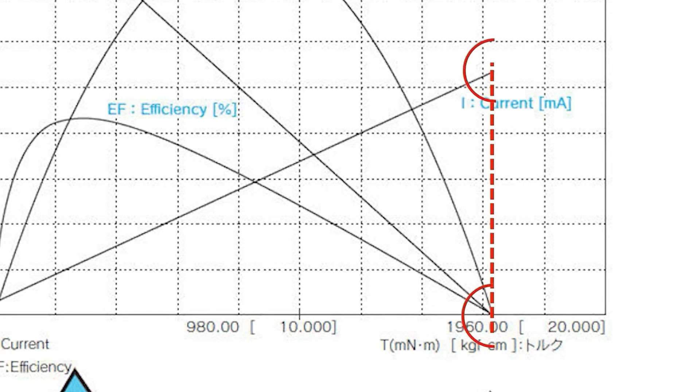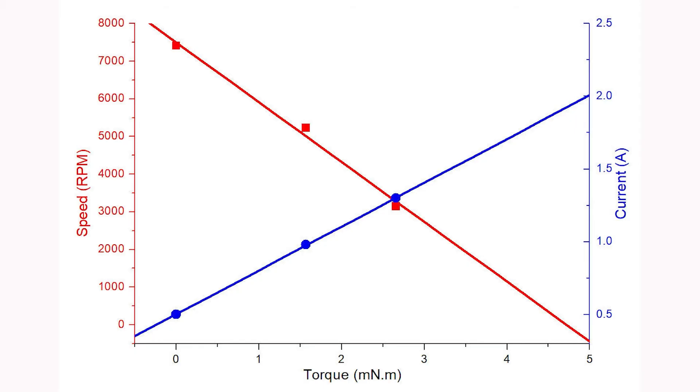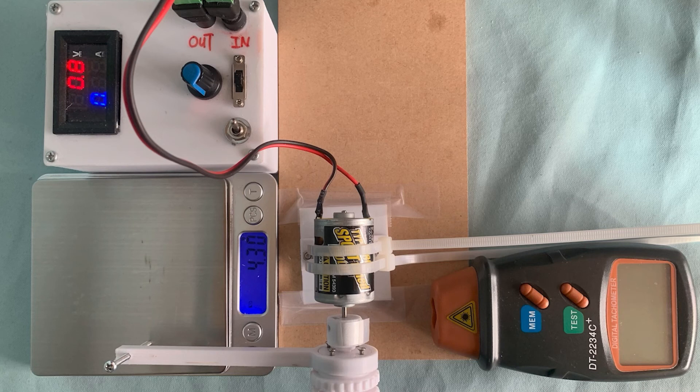It is dangerous to measure the stall current since it may destroy the DC motor. The stall torque and the stall current can be calculated using the linear fit equation, where the stall torque is 4.85 mNm, and the stall current is 1.9 A. The dynamometer works very well.